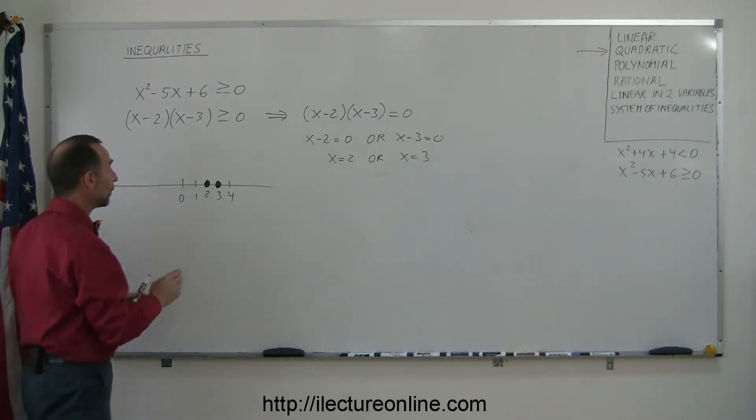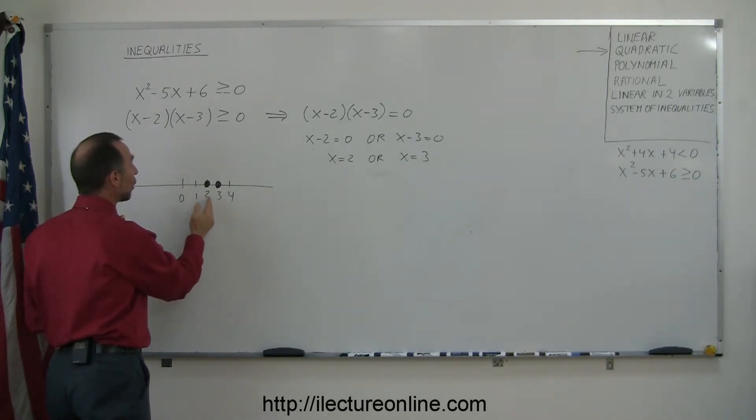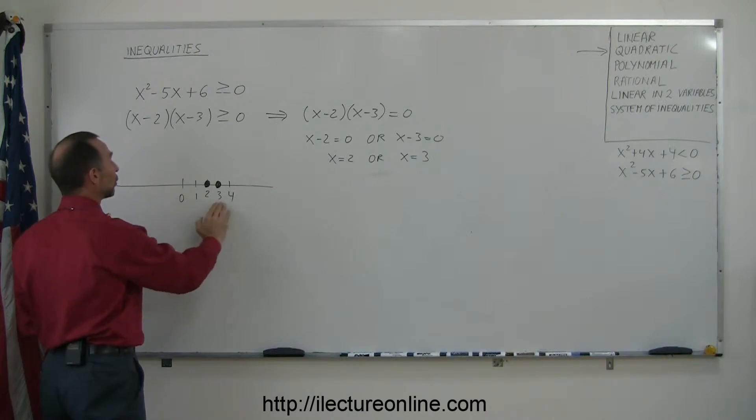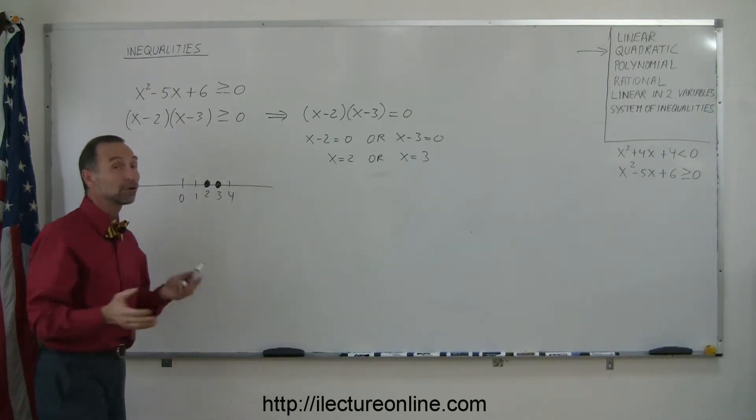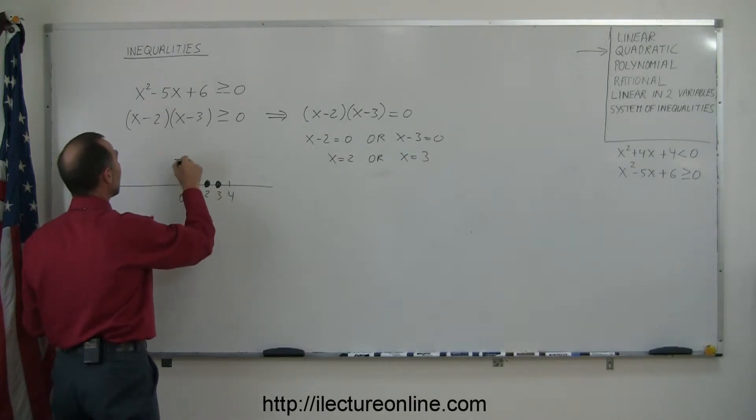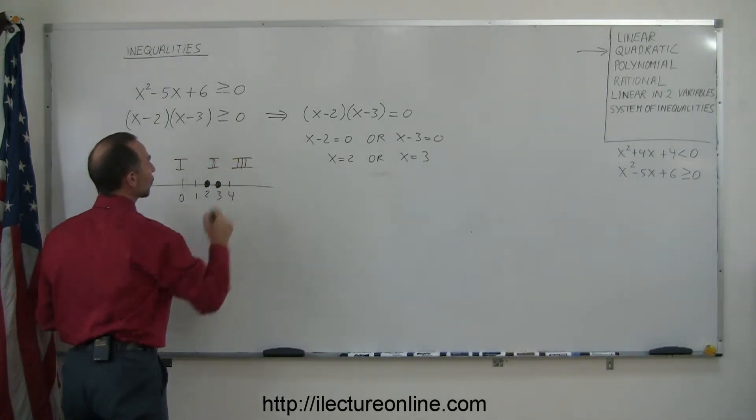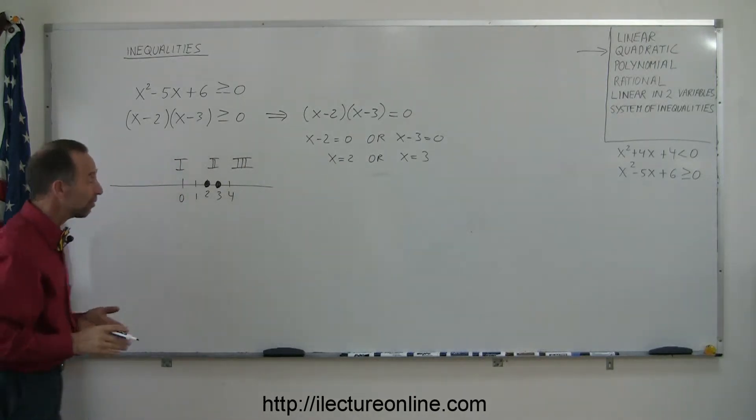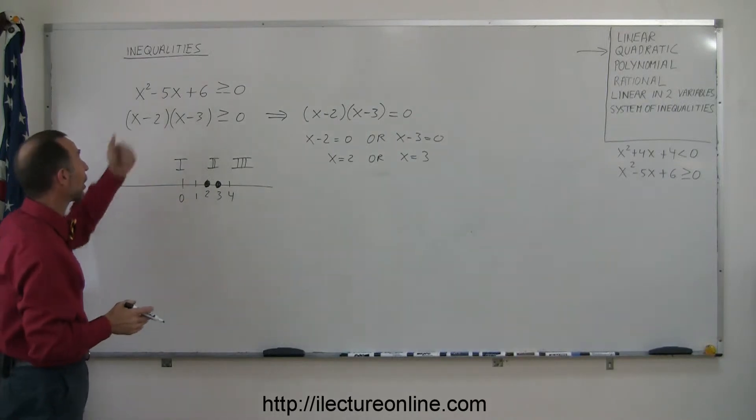But now the question is, how about the region between 2 and 3, or the region to the left of 2, or the region to the right of 3? Are those part of the solution as well? So that means those two points have now delineated region 1, region 2, and region 3. So now we need some test points to verify if these three regions, or any of these three regions, belong to the solution of that inequality.